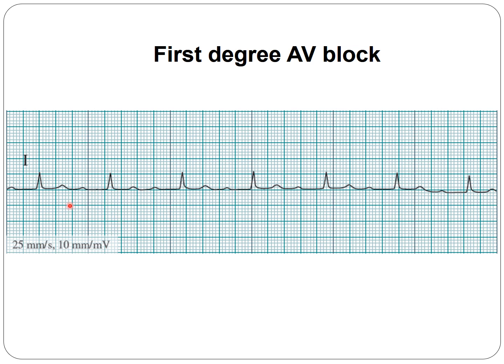As seen in these tracings, we have regular rate and rhythmicity — the rate is around 70. We do have P waves that come regularly. Marking the PP interval and shifting it confirms that every P is generated rhythmically in the sinus node. However, the conduction through the AV node is longer — from the beginning of the P wave to the beginning of the QRS, it's longer than 0.2 seconds; in this case, approximately 0.35–0.36 seconds.